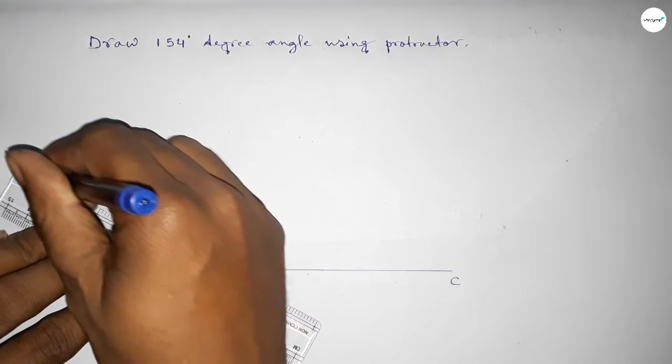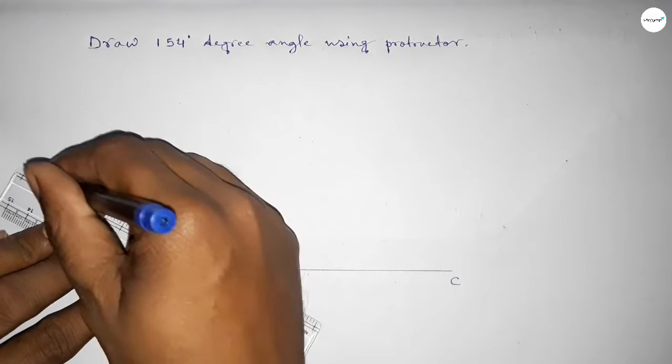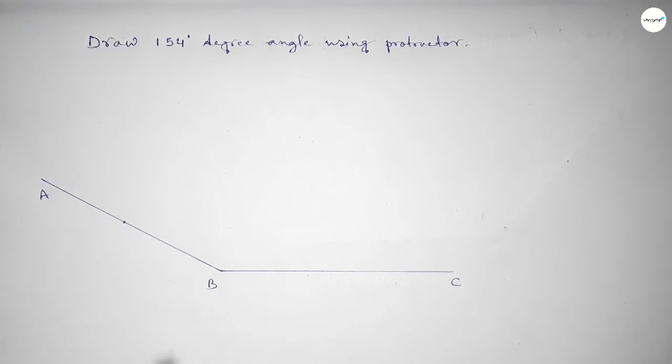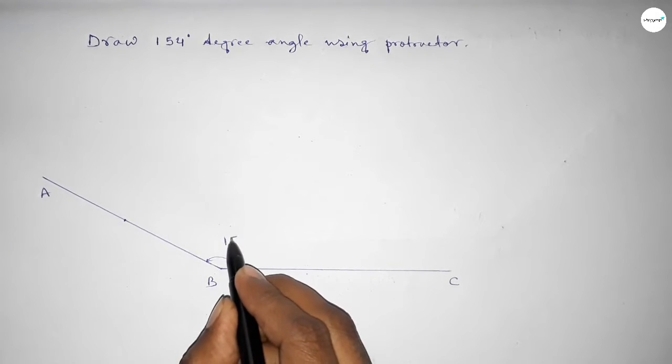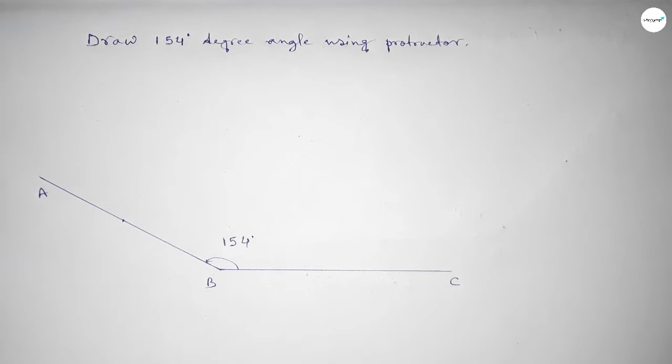Now take point A here, so angle ABC is 154 degrees.